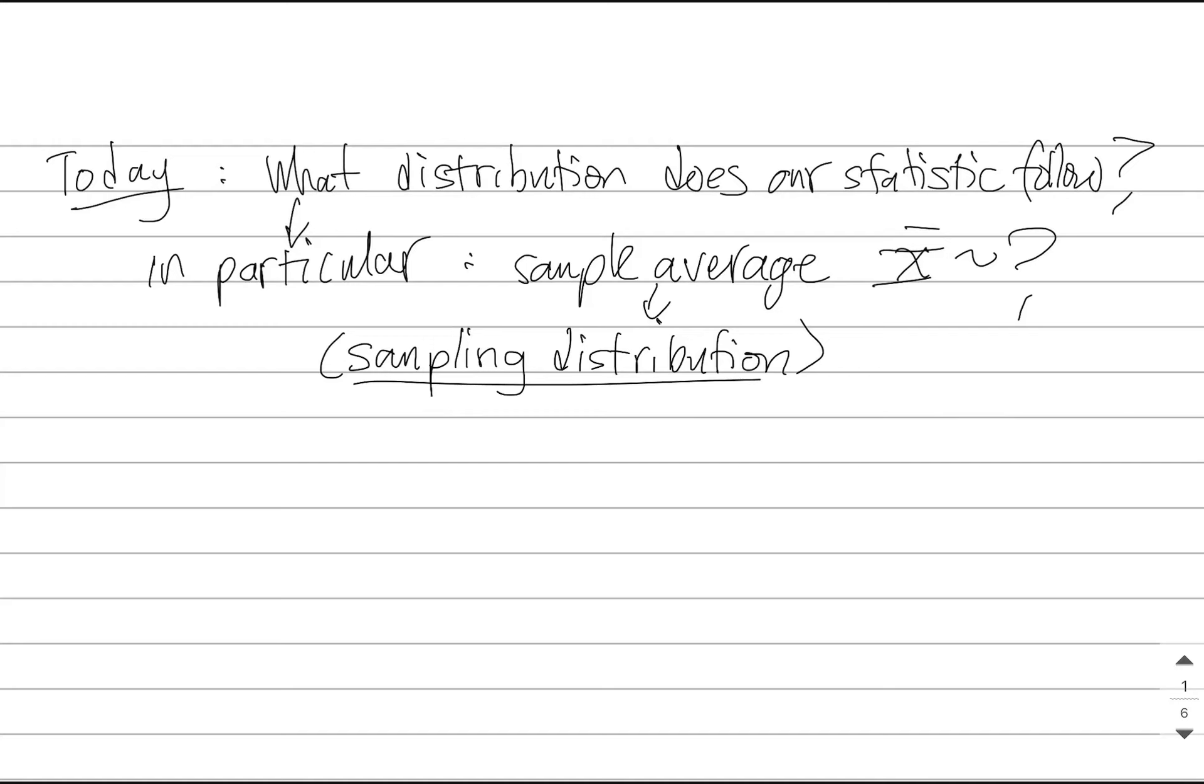Now you might think, well, we already know the answer to this. The central limit theorem tells us that if we have a sample of size greater than or equal to 30, we know that the sample average has to be normally distributed. It has the same mean as the population, but its variance is reduced. But there is an issue.